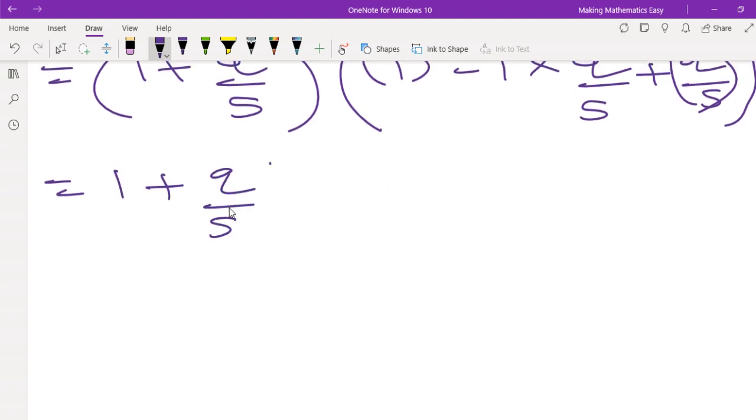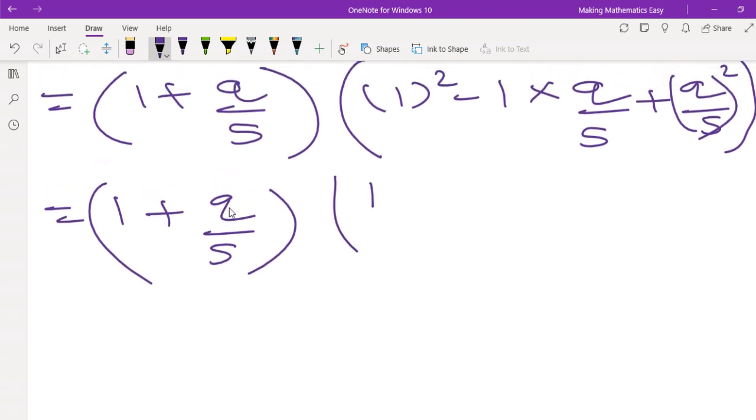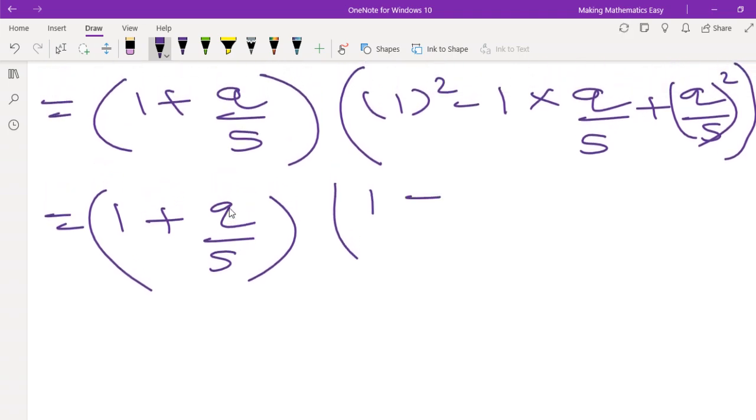There will be no change in this bracket. Square of 1 is 1. 1 multiplied by q upon 5 will stay as this. Q square is q square, 5 square is 25.